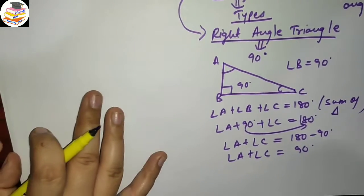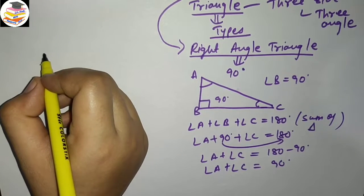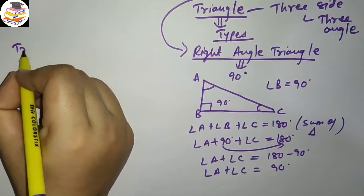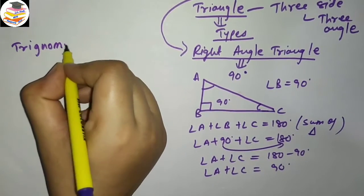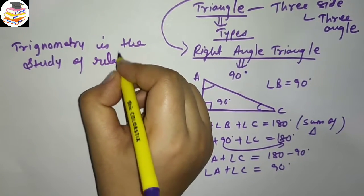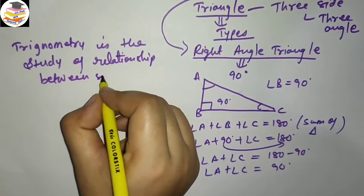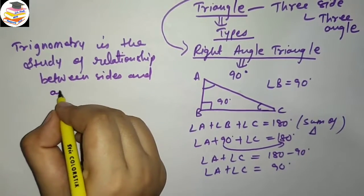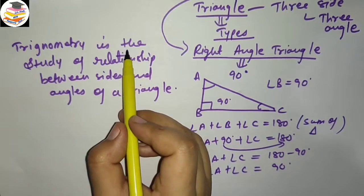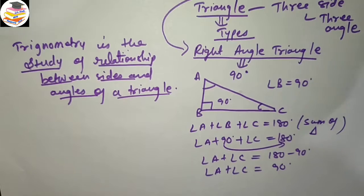Now let's talk about what trigonometry basically is. Trigonometry is the study of the relationship between the sides and angles of a triangle. That is your introduction to this chapter.